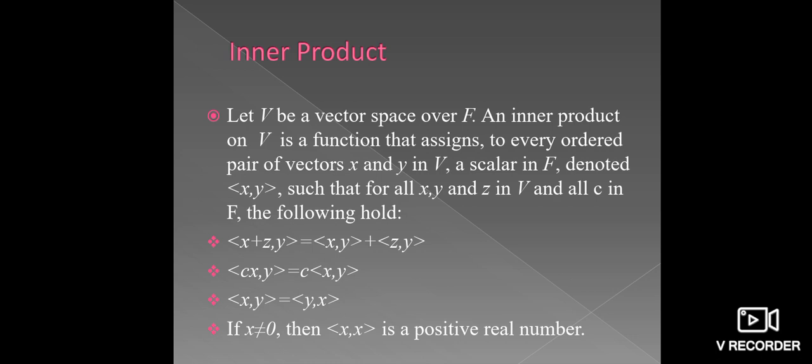First, to see the definition of inner product space: let V be the vector space over the field F. An inner product on vector space V is a function that assigns to every ordered pair of vectors X and Y, which belong to vector space V, a scalar in the field F, denoted by the ordered pair (X, Y), such that for all X, Y and Z in V and scalar C belonging to F, the following conditions hold. First: the ordered pair (X+Z, Y) equals the ordered pair (X, Y) plus the ordered pair (Z, Y).